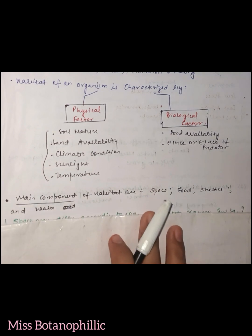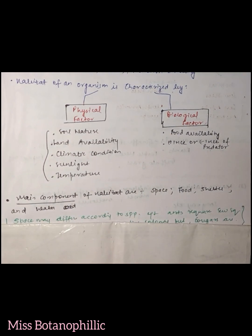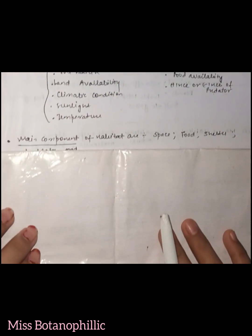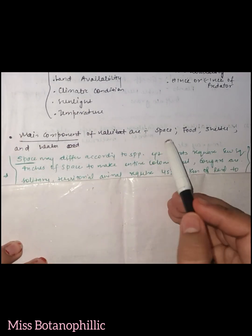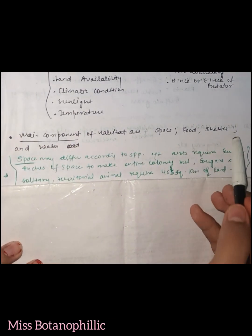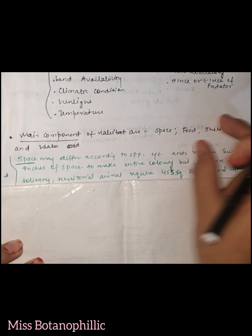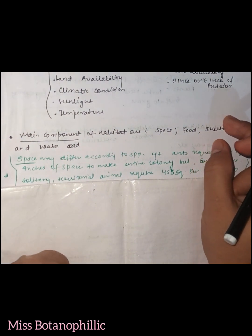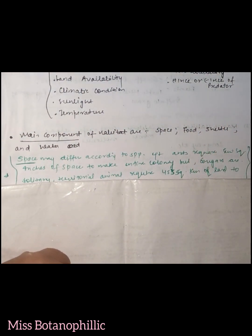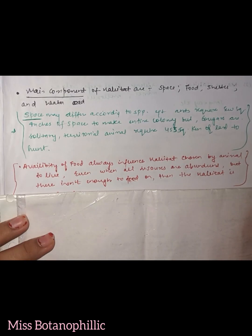Next what we have is main components of the habitat. Generally what are the main components of a habitat? First we have space, food, shelter and water. These four are generally called the main components of a particular habitat. Among these, the most important is food.